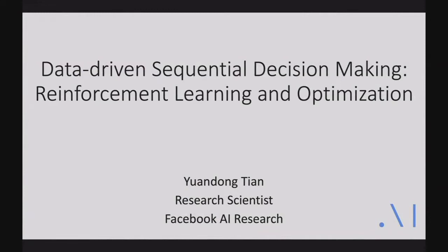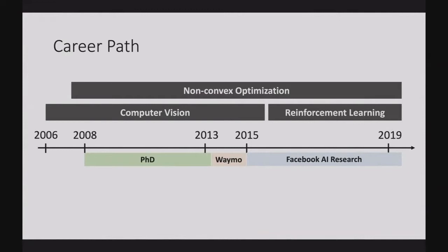Thanks all for attending. Today I'm going to talk about data-driven sequential decision-making, reinforcement learning and optimization. The title might seem odd because reinforcement learning and optimization look like two different directions. This reflects my career since PhD — I work on two parallel tracks: one on the application side, previously computer vision and now reinforcement learning, and the other on non-convex optimization theory. Working on only theory risks unrealistic assumptions, while only application can get lost in empirical evidence, so a combination is interesting.